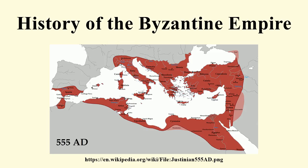The final centuries of the Empire exhibited a general trend of decline. It struggled to recover during the 12th century, but was delivered a mortal blow during the Fourth Crusade, when Constantinople was sacked and the Empire dissolved and divided into competing Byzantine, Greek and Latin realms. Despite the eventual recovery of Constantinople and re-establishment of the Empire in 1261, Byzantium remained only one of several small rival states in the area for the final two centuries of its existence.